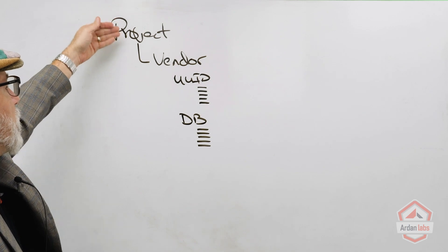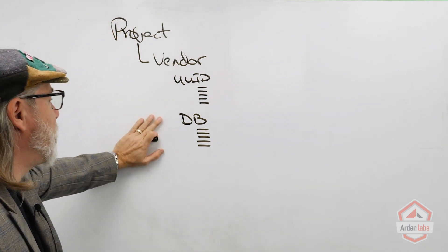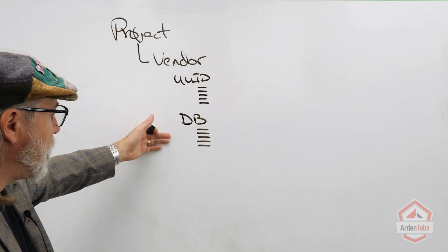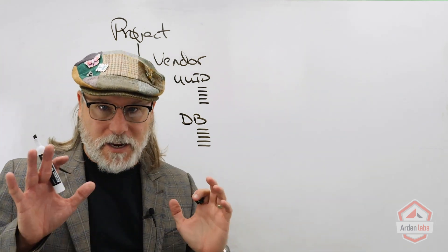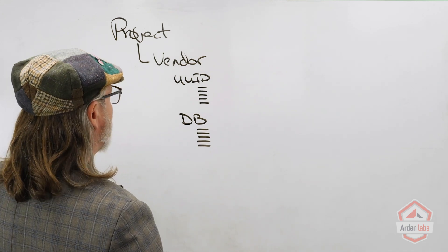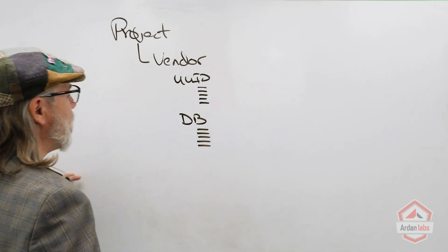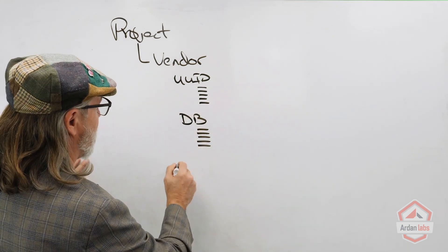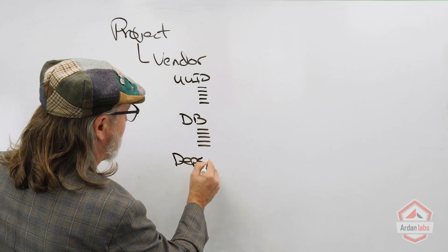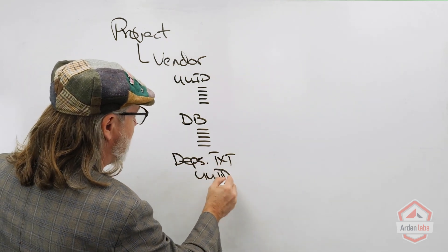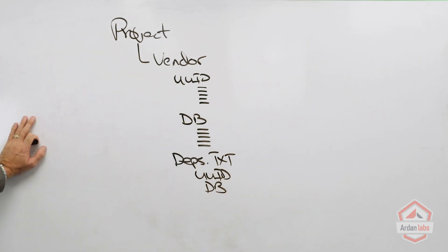When we build the applications associated with this project, we can point to the vendor folder for those pieces of source code. But ideally, I don't want to save the vendor folder in GitHub. What I'd like is to recreate it whenever I need it. So inside the project we add a file — let's call it deps.txt — that lists the dependencies like UUID and database, with enough information about where to find them on GitHub.